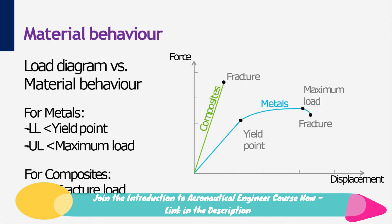The load diagram and the definitions can also be related to the different materials used in the aircraft. If you look at the force-displacement curve of a metal alloy, you can see that the material shows elastic and plastic behavior. Up to the yield point, the material behaves elastically and all deformations are reversible. Beyond the yield point, the material becomes plastic and the deformations are permanent and irreversible. The limit load should be below the yield point and the ultimate load should be below the maximum load. For composites, which show elastic ultimate failure, the ultimate load should be below the failure load. Currently, the safety factors used for composites are higher than for metal alloys.